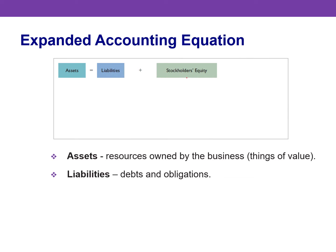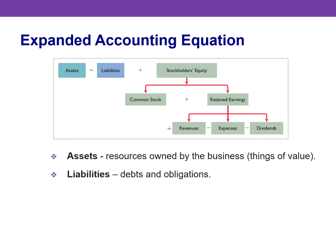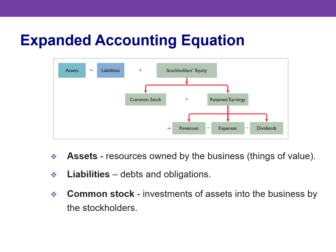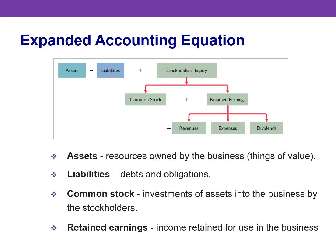To illustrate how economic events affect the accounting equation, we will examine events affecting Pioneer Advertising Agency. We will expand the basic accounting equation to illustrate the impact of transactions on stockholders' equity. Stockholders' equity is comprised of two parts: common stock and retained earnings. Common stock is affected when the company issues new shares in exchange for cash, whereas retained earnings is affected when the company recognizes revenue, incurs expenses, or pays dividends. Revenue increases retained earnings, whereas expenses and dividends decrease it.